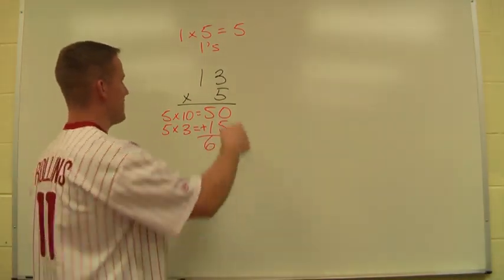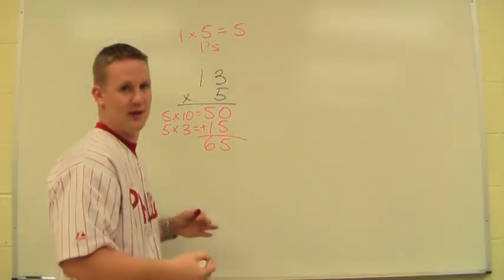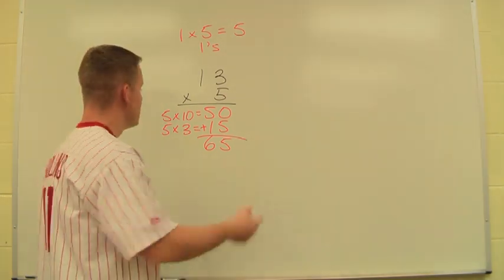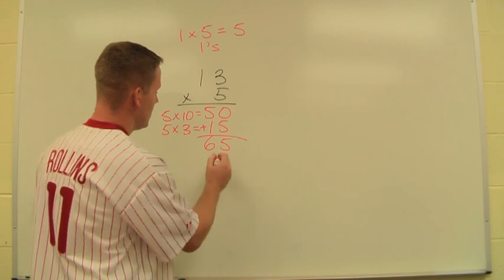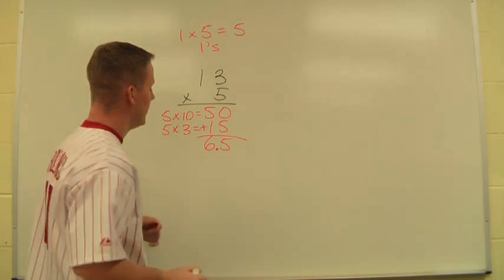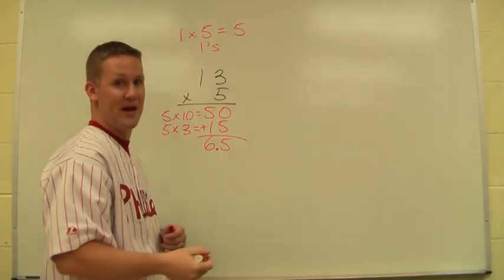Now, if we get an answer 65, and if we go back to our estimate and keep in mind it should be in the 1s, we know that we're missing something. We're missing the decimal point in this case. So now I can go back and put my decimal point in to make sure that this is in the 1s and not in the 10s. So by putting a decimal point right in the middle, I know that my answer is 6.5. It does make sense. It's around 5 where my estimate was.